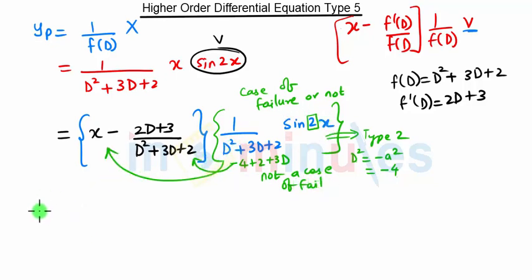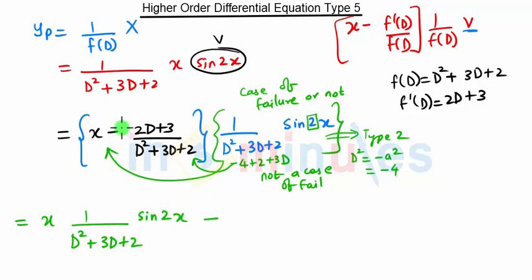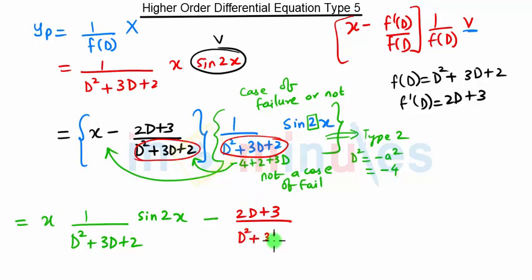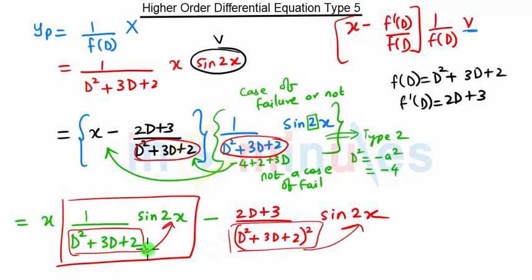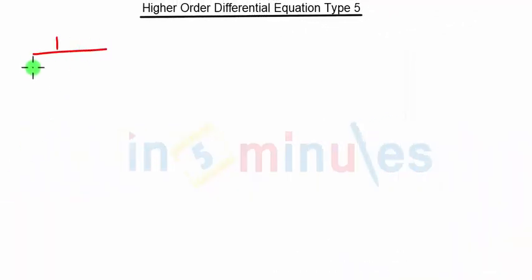Whenever the outside term is not a case of failure, we multiply this term inside the bracket. So we get X into 1 upon D squared plus 3D plus 2 into sine 2X. The minus sign and the numerator remain as they are, and the denominator terms multiply to become D squared plus 3D plus 2, the whole square, into sine 2X. Now we apply the operator D. First, consider only the part 1 upon D squared plus 3D plus 2 into sine 2X, which is again of the form of Type 2.